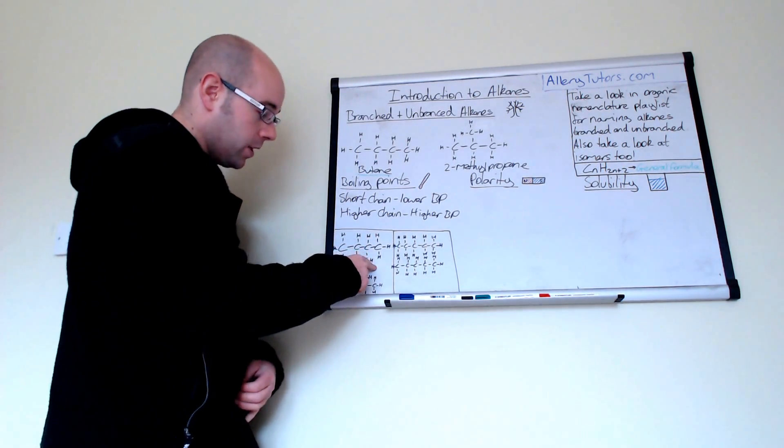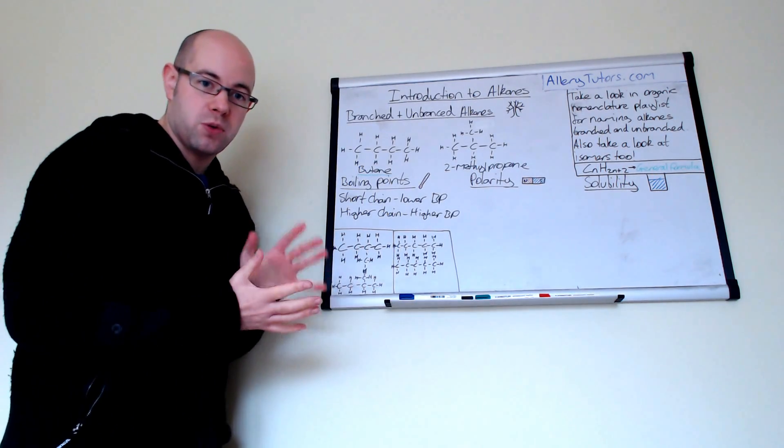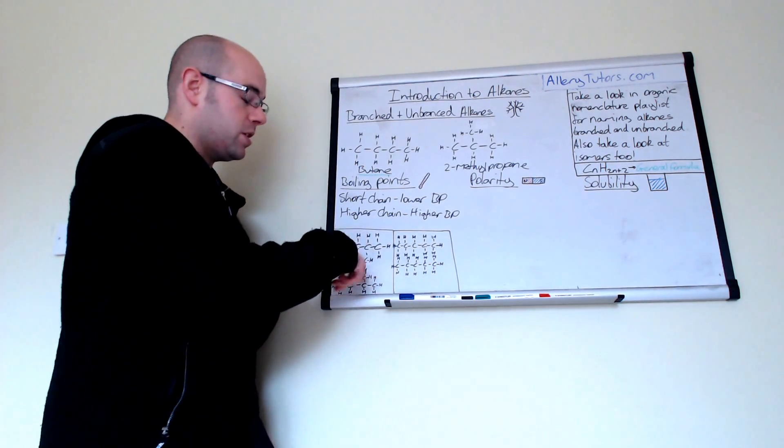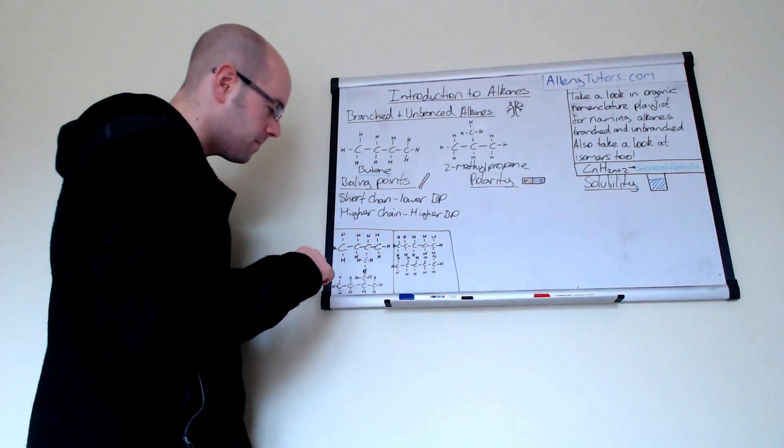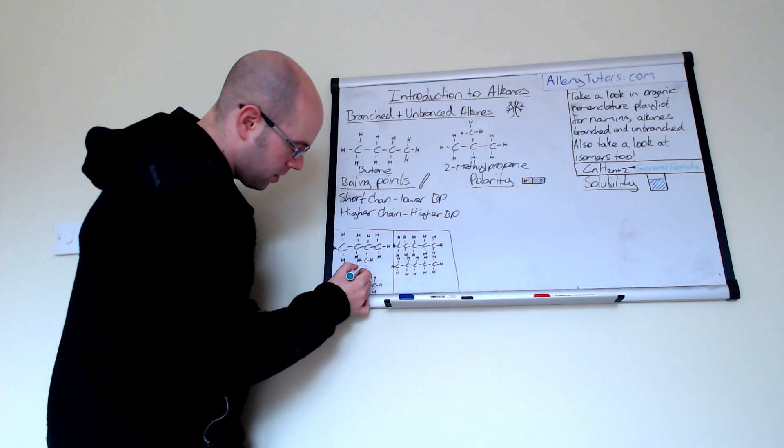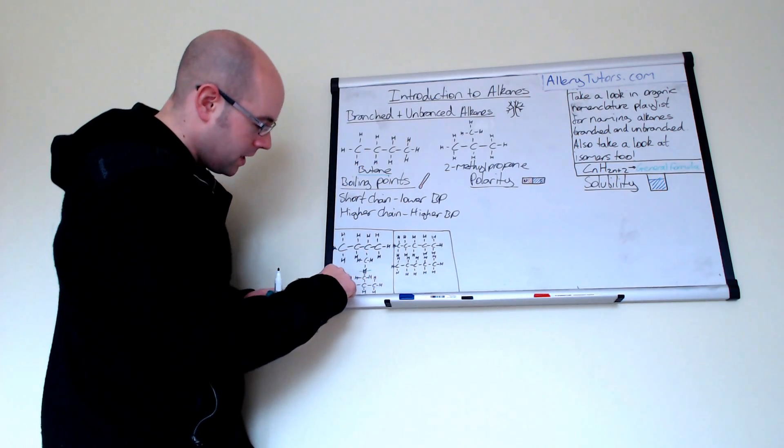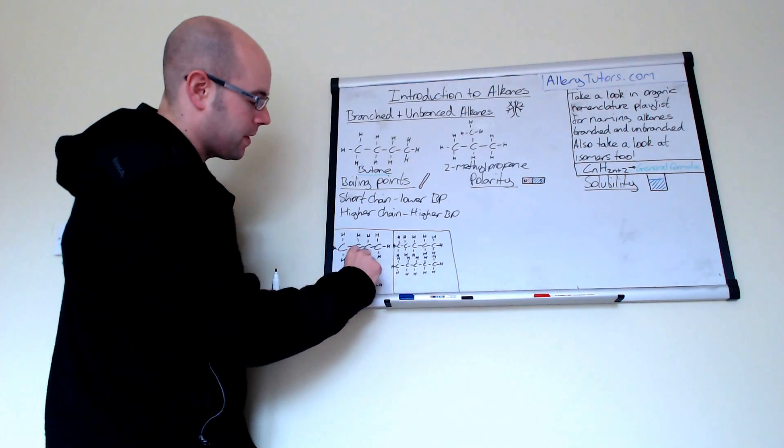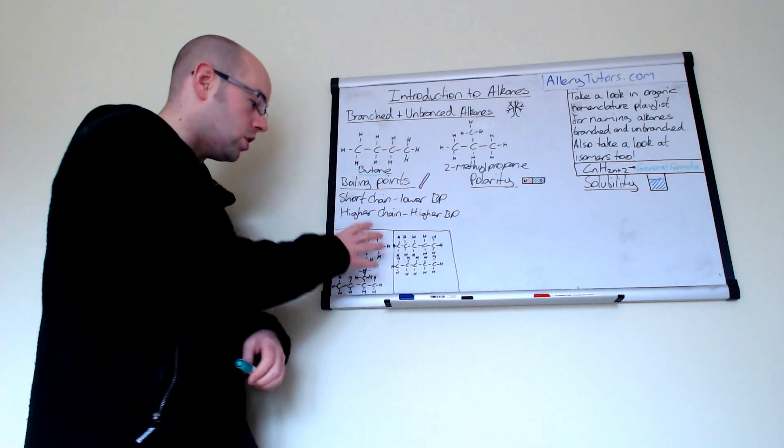But actually, this one here, with the branching actually weakens the intermolecular force between the molecules. And actually, the boiling point of these molecules here with branching actually reduces. So you can see here, if you look where the interactions occur with your van der Waals, is actually there. And the rest of the molecule, because we've got these two branches sticking out, it's actually blocking the ability to interact with the other molecule. You can see there's a big gap there. So branching actually weakens the van der Waals force between these molecules and lowers the melting point.